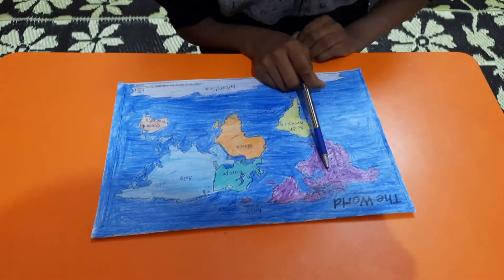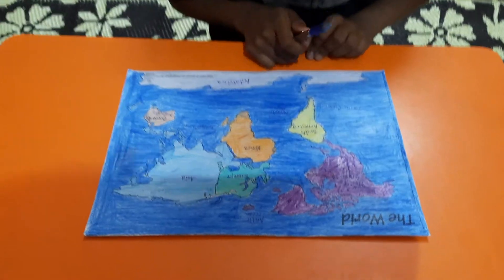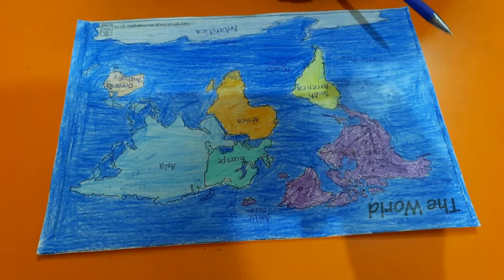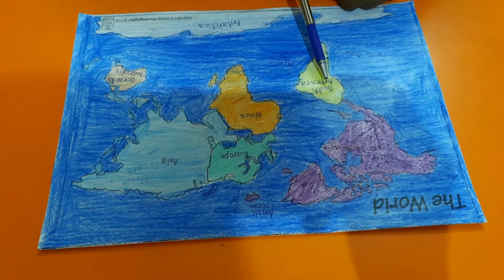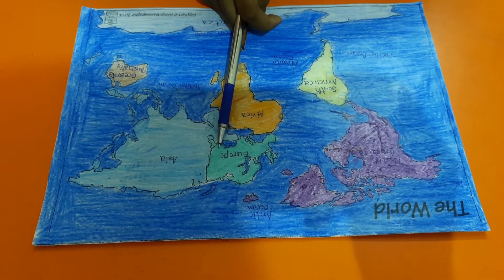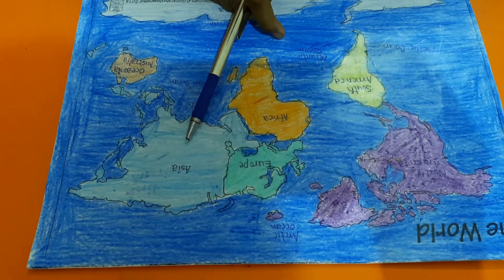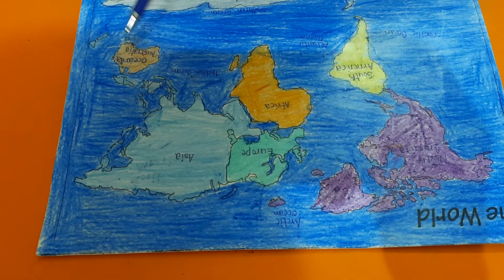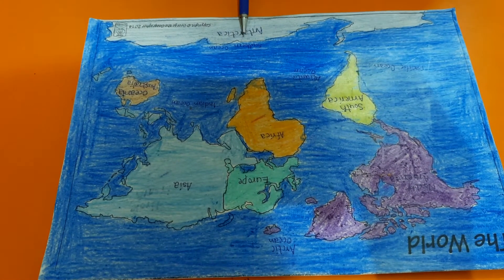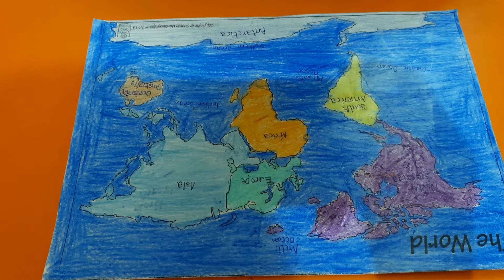There are 7 continents and 5 oceans on the earth. First: North America, South America, Europe, Africa, Asia, Oceania or Australia, and Antarctica.